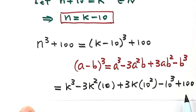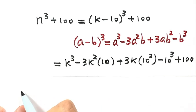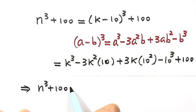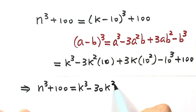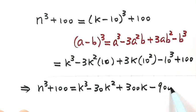Then simplify this part. So then we have the following. That's n to the third plus 100 equals k to the third minus 30k squared plus 300k. Then we're going to combine these two together, minus 900.